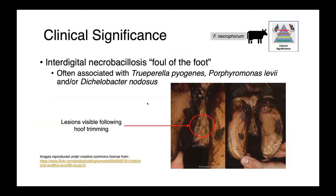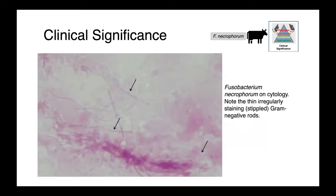In this image you can see interdigital necrobacillosis, otherwise known as foul of the foot. Here we see Fusobacterium causing infections along with Truperella, Porphyromonas, or Diclobacter. There are lesions between the claws visible following hoof trimming — a sort of ulcerative lesion. If we were to take samples from these infections and look at them cytologically, we would see long, thin gram-negative rods that stain irregularly, with stippling and darker-stained regions within the cells. This irregular staining is characteristic of Fusobacterium.